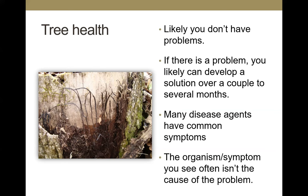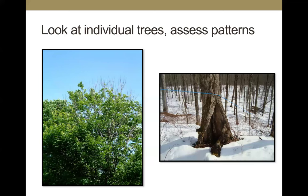If you see signs or symptoms, start by thinking to yourself that you likely don't have an overwhelming problem — this is not something you need to panic about. You've got time to learn what's going on and make a deliberate, informed decision over several weeks or a couple of months. Many disease agents have common symptoms, and the organism you see is often not what's causing the problem. The picture here is a stump with armillary root rot, also known as shoestring root rot, which can be both a decomposer and parasitic.